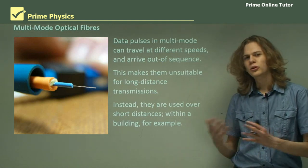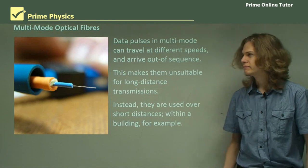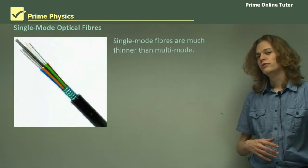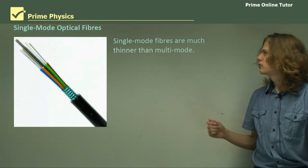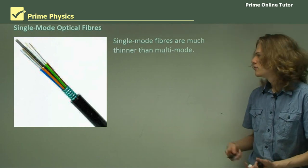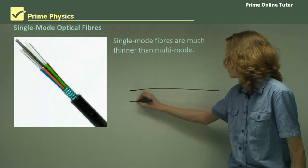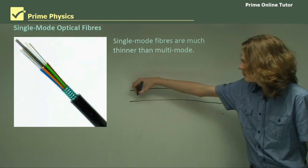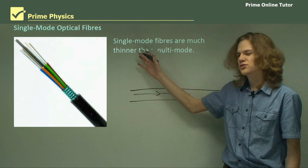If we want to transmit over long distances, then we should be using single mode fibers. In this case, we have a very, very thin optical fiber. And light can only travel one way — that is, it can only travel in a single mode.